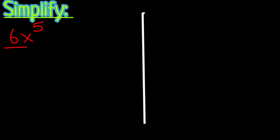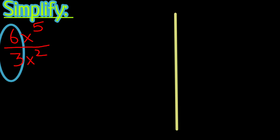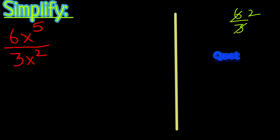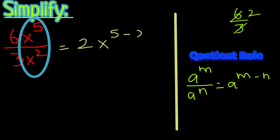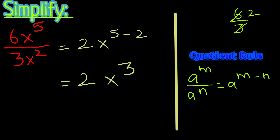The second problem is 6 times x to the power 5 divided by 3 times x to the power 2. Dividing the constant terms: 6 over 3 gives 2. Then dividing the variables, we have x to the power 5 minus 2, giving us 2 times x to the power 3.